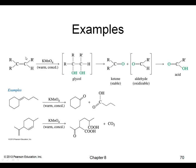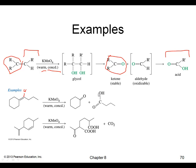Here's an example: we have an alkene reacting with warm, concentrated KMnO4. One part of the alkene — the disubstituted carbon — becomes a ketone. The other side becomes a carboxylic acid. The carbon that had a hydrogen becomes the carboxylic acid, and the carbon without a hydrogen becomes the ketone.